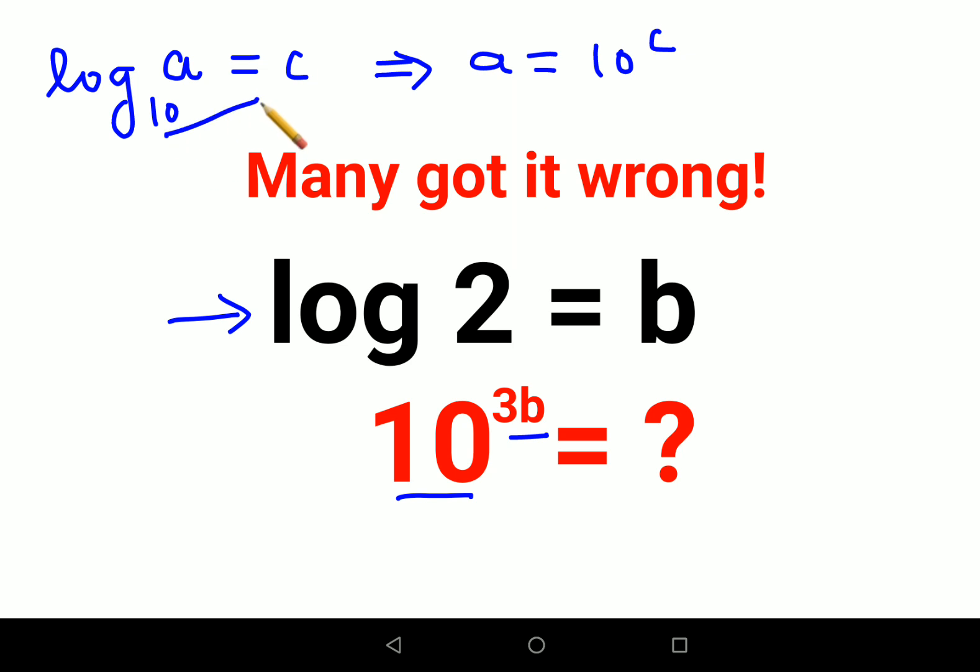Whatever is the base becomes the base over here and whatever is the answer over here becomes your index. So using that same thing, basically this is log of 2 to the base 10, so therefore I can say that 10 raised to b is your value of 2.